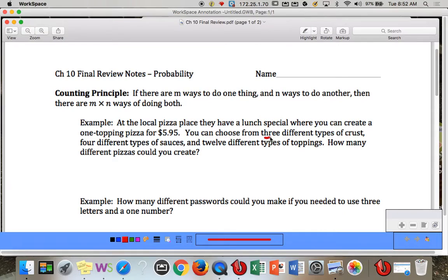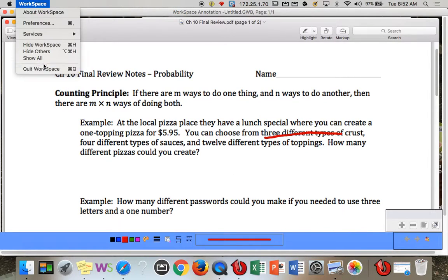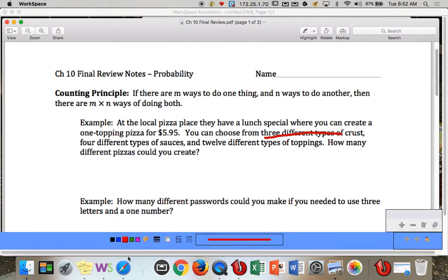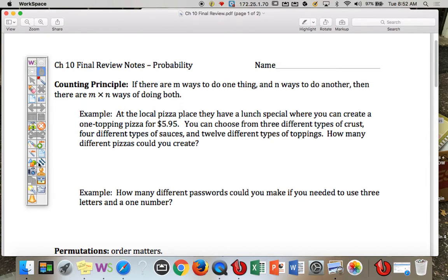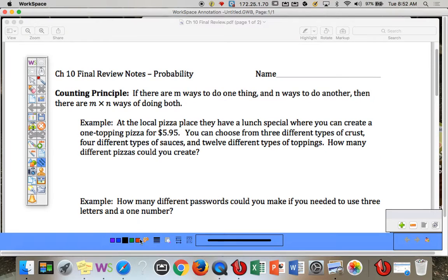So let me underline all this. Let's do that better. So three different types of crust. I'm going to underline that. Four different types of sauces. And 12 different types of toppings. How many different pizzas could you create?